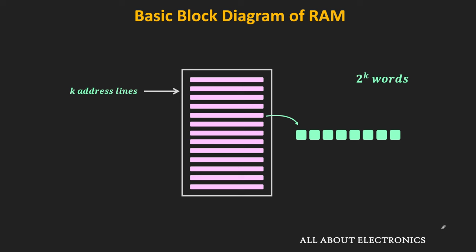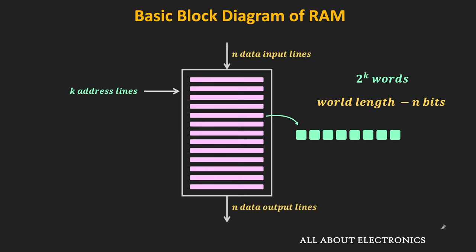If each word consists of n bits, then to read data from the memory we require n output lines, and to write the data we require n input lines.